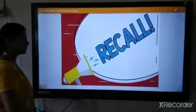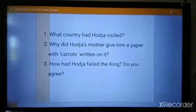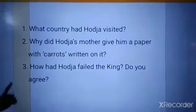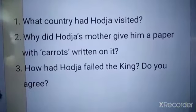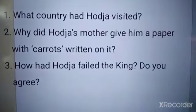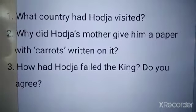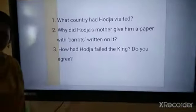Before going into the topic, as usual, we recall our previous lesson. What was the first question? What country had Hoja as a visitor? Then, why did Hoja's mother give him a paper with carrots written on it? How had Hoja failed the king? So these are the questions we saw in the previous class.